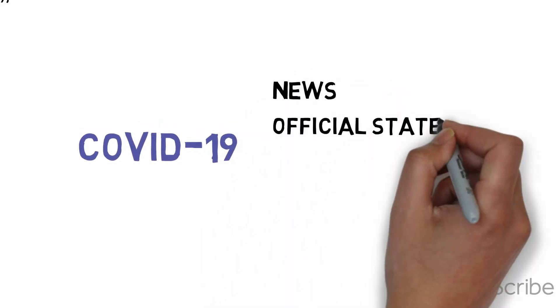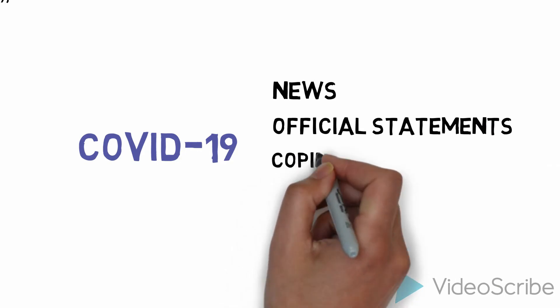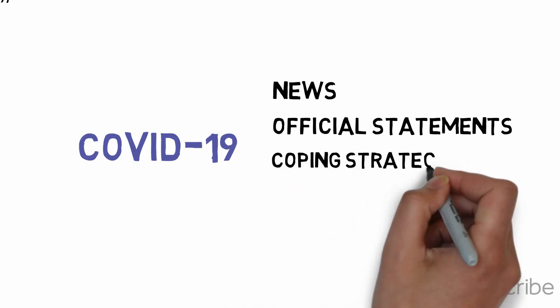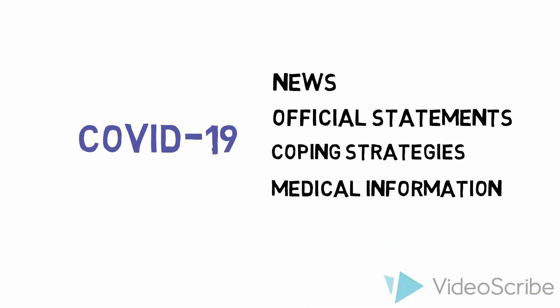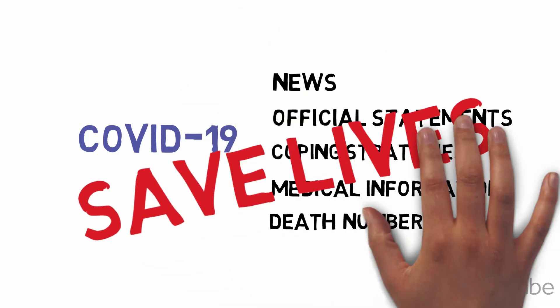Risk communication during COVID-19 includes spreading news, publishing official statements and coping strategies, sharing medical conditions, and giving clear death numbers. The goal is to inform people of the features, symptoms, prevention strategies, and death rate to help people make decisions that could save lives during the pandemic.